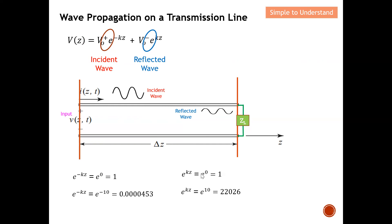Now let's look at the reflected wave using the same two extreme cases for e^(+kz). At z = 0, the value is one, and as z increases, the number increases. The incident wave propagates, hits the impedance mismatch, and reflection occurs. The reflected wave typically has a larger amplitude at the load end, becoming smaller as it moves back toward the input. Because e^(+kz) gives a larger value as z increases to the right, I conclude this is the reflected wave.